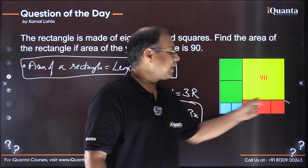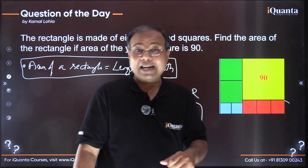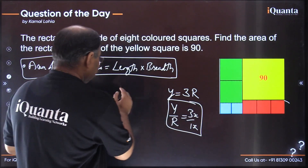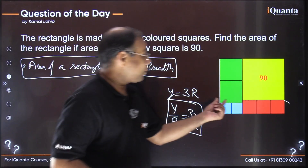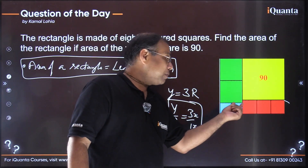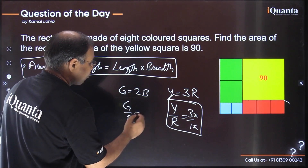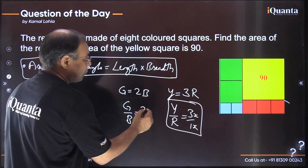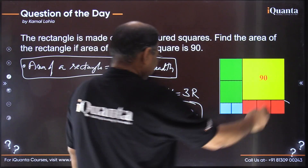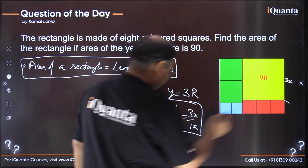If I say the length of the yellow square is 3x, then the length of the red square is 1x. Similarly, looking at the green and blue squares: one green length equals two blue lengths, so g = 2b, meaning g/b = 2/1. If the green square's side is 2y, then the blue square's side is 1y.